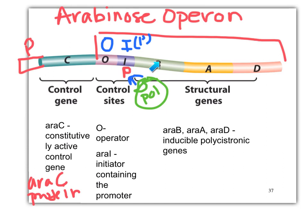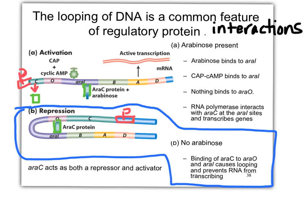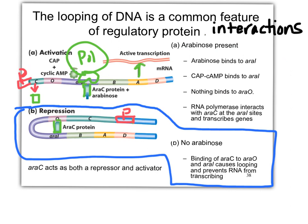The operator is on the opposite side in the arabinose operon. If we have arabinose present, this top section shows what happens. We're always getting transcription of the ARAC protein. If there's arabinose present, it binds to ARAC, and ARAC binds to the initiator region, which contains the promoter. In that case, nothing binds the operator, and RNA polymerase can come in, grab onto the promoter, and we get transcription. So when arabinose is present, we get transcription.